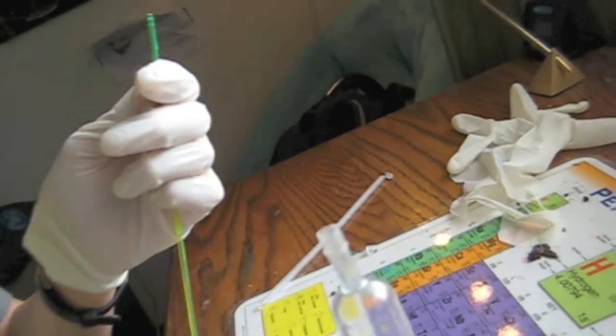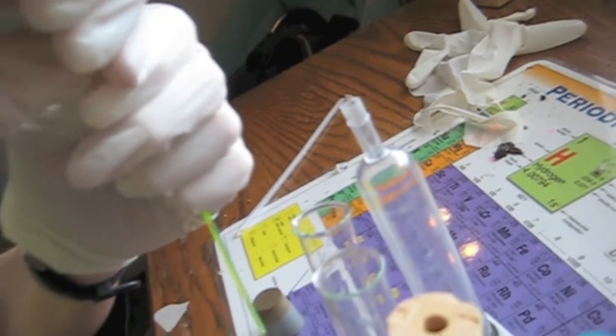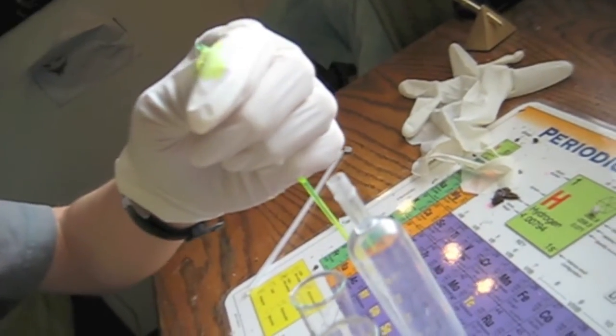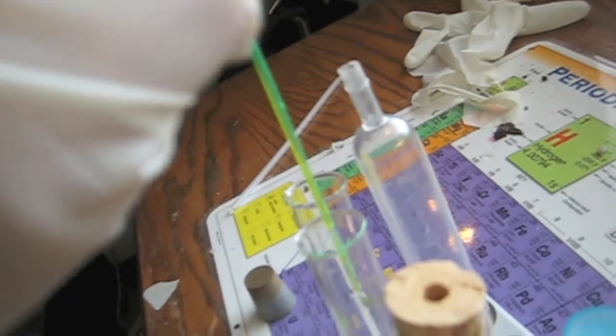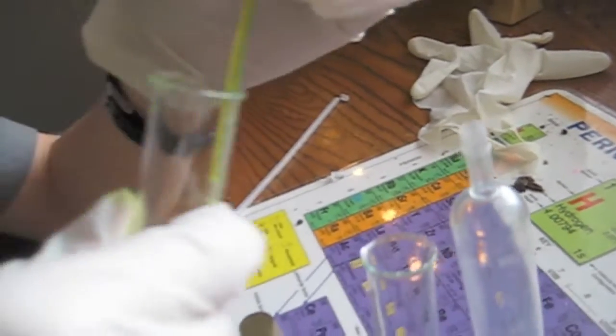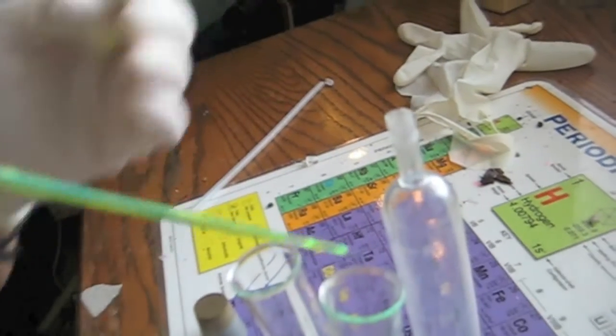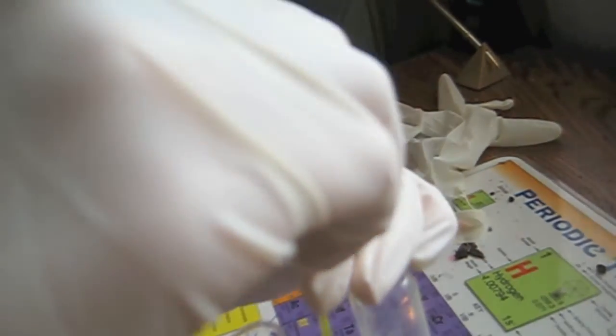We'll pour this into the second test tube by breaking off the tip. The phenyl oxalate is an oily liquid. And it will react with hydrogen peroxide to produce carbon dioxide and a glow. Looks like it doesn't want to come out of the tube. I'm going to break the top to let it come out. There we go.